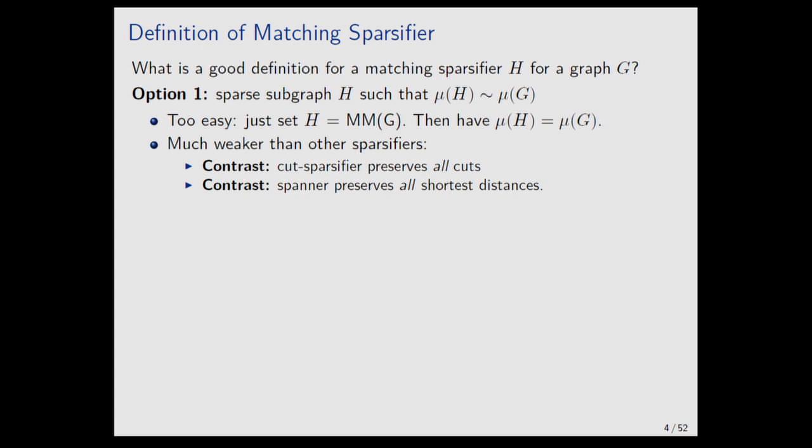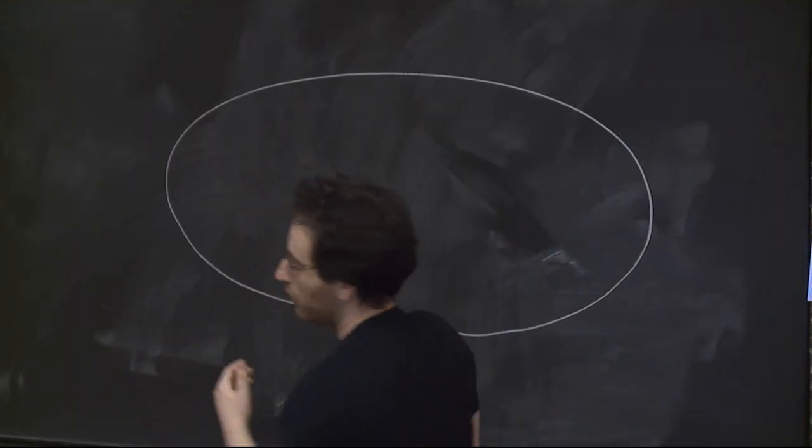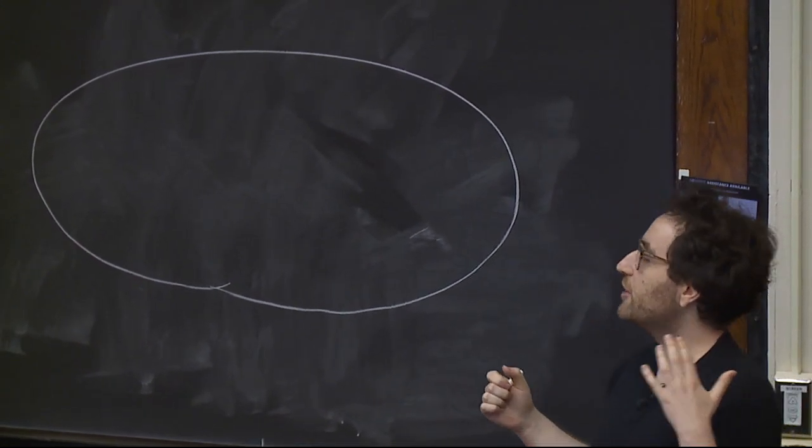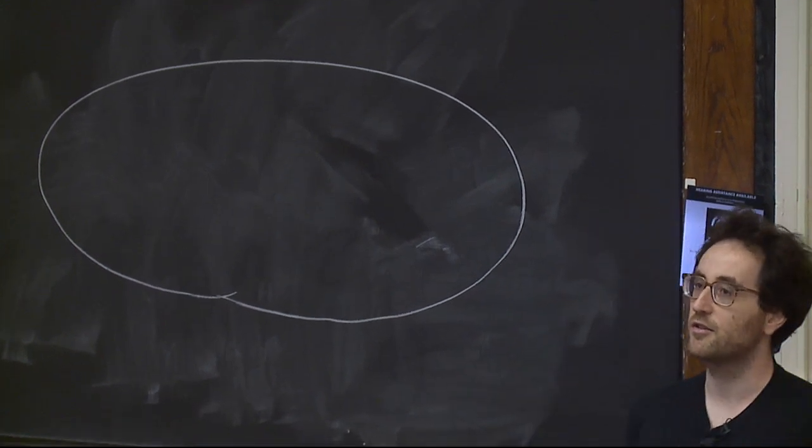The contrast is that a cut sparsifier doesn't just preserve the minimum cut, it preserves all the cuts. Whereas preserving just the maximum matching is very little. Other issues: it's not robust. If the graph changes, if you have a clique and you delete the single matching in your sparsifier, the graph is still basically a clique but your subgraph is gone. It's also not composable. Even if all you care about is maintaining a maximum matching, it might still be useful to have an object that preserves more information, because sparsifiers are meant to be a general tool that work in many different settings — streaming, parallel, distributed, and dynamic.